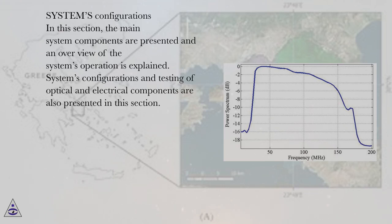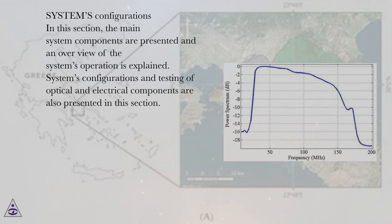Systems configurations. In this section, the main system components are presented and an overview of the system's operation is explained. Systems configurations and testing of optical and electrical components are also presented in this section.